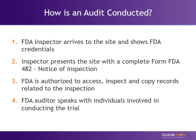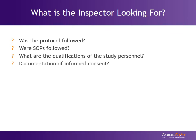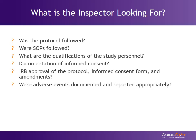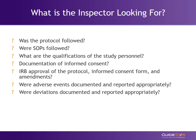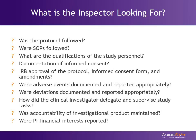The inspector will likely speak with individuals involved in conducting the trial. This extensive and likely unplanned audit process is part of why GuideStar considers it a best practice to regularly train the research staff on FDA audit procedure. The FDA inspector will be looking at a number of areas during the audit, such as: was the protocol followed? Were SOPs followed? What were the qualifications of the study personnel? Is specific documentation of informed consent present? They will review documents such as IRB approval of the protocol, informed consent form, and amendments. They will determine if adverse events were documented and reported appropriately, whether deviations were documented and reported appropriately, how the clinical investigator delegated and supervised study tasks, whether appropriate accountability of investigational product was maintained, and they will also review any financial interest reported by the clinical investigator.